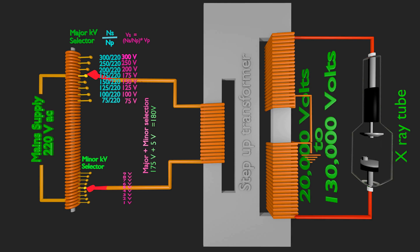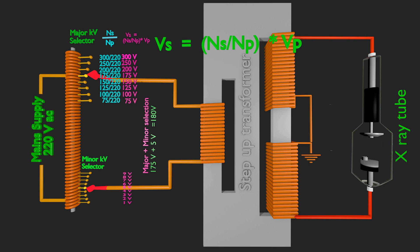As per transformer law, voltage at secondary of step-up transformer will be turn ratio multiplied by voltage across primary. Let's assume turn ratio of our step-up transformer as 400. That is, secondary has 400 times more windings than that of primary. 180 volt is our input voltage to primary of step-up transformer. Upon multiplication, we get a value of 32 kV. So, a potential difference of 32 kV is now applied across X-ray tube as it is connected to secondary of step-up transformer.